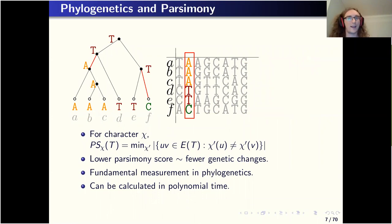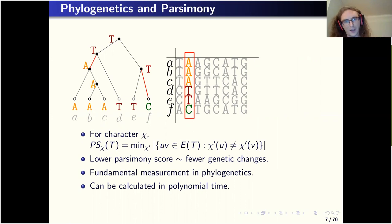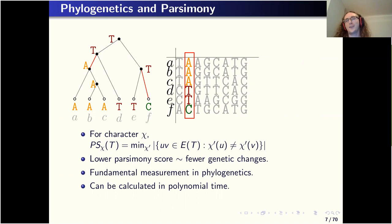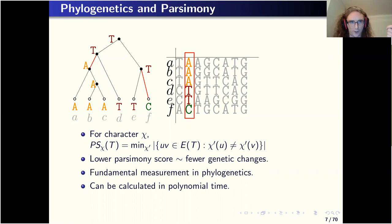We're interested in finding, for a given character, the tree that has the lowest parsimony score with respect to that character, or perhaps the lowest parsimony score with respect to a number of characters. Because the fewer times you have to change state, the simpler your evolutionary history is, and the more likely we think that particular tree is to fit the data. So it's a fundamental measure in phylogenetics.